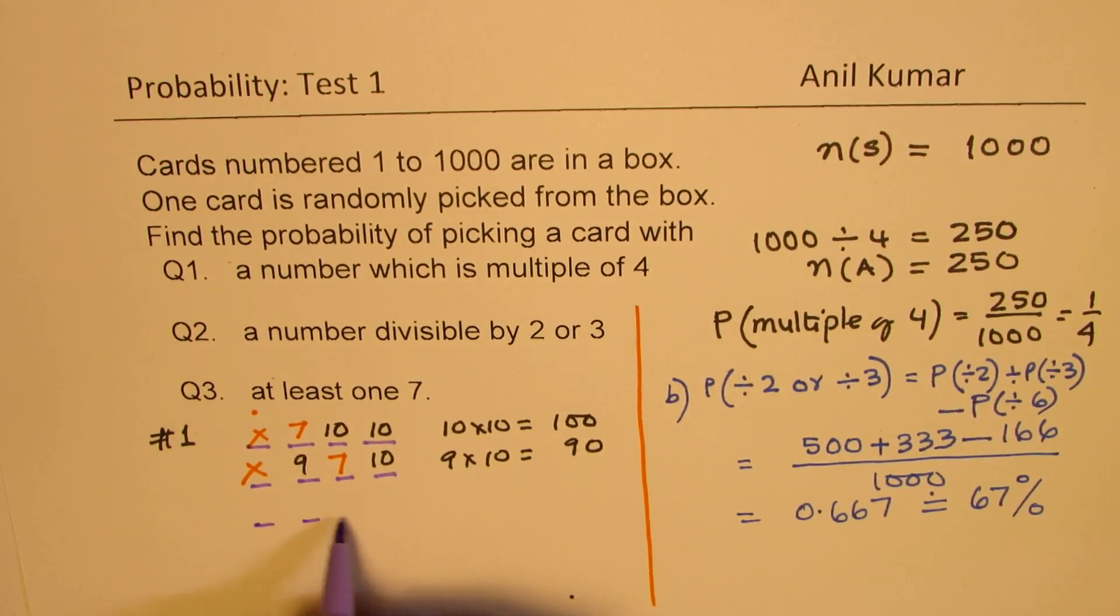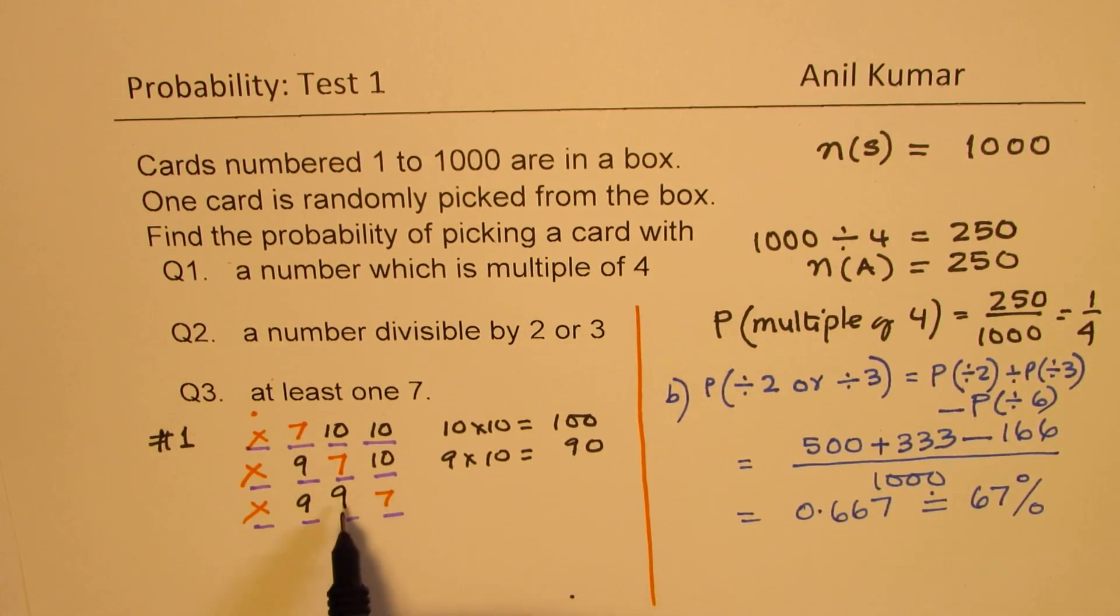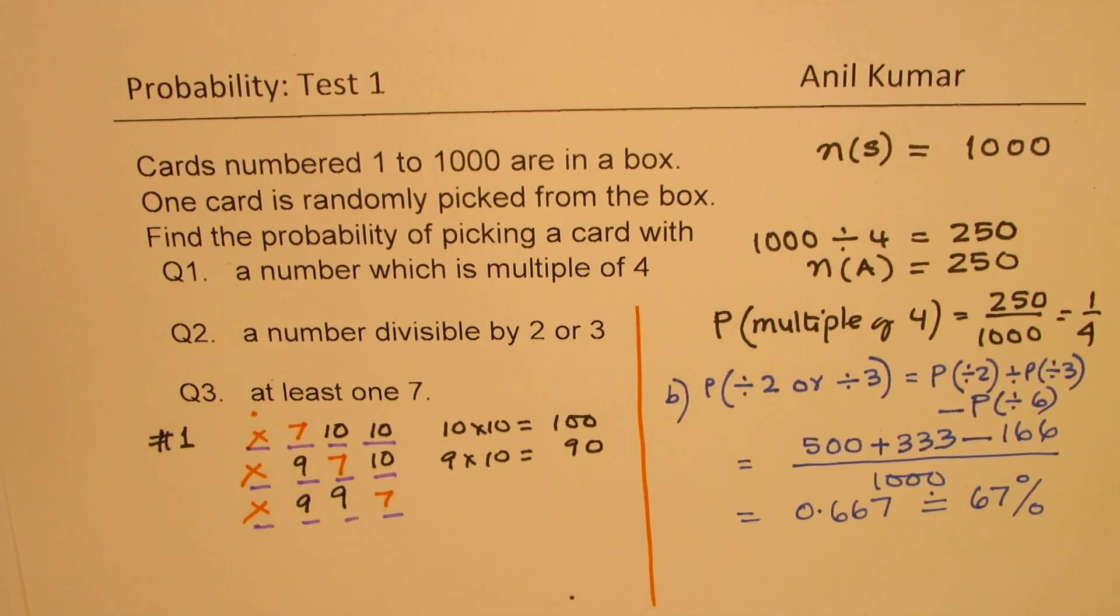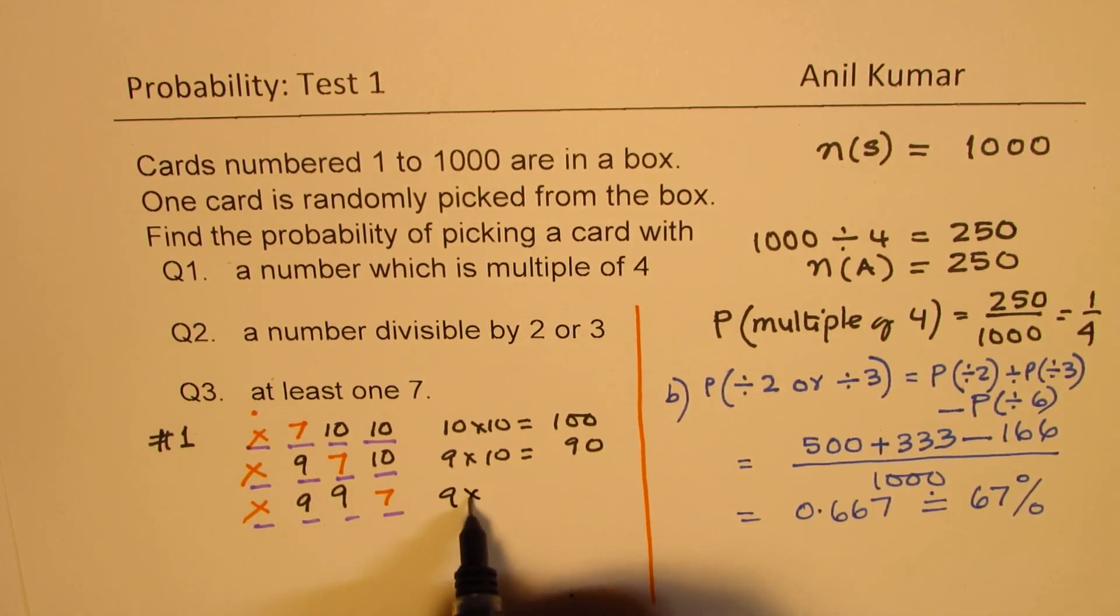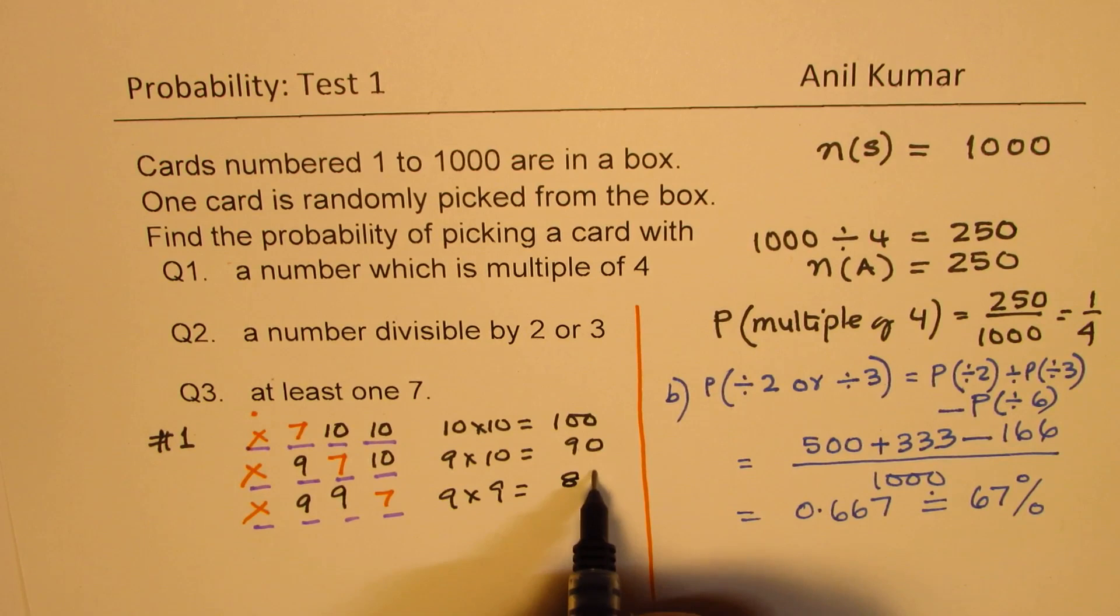Now, if we say for sure 7 is there in the third place, which is the ones place, in that case, we'd like to have 9 numbers here maximum. Since we have already considered a case with 7, here also only 9 are possible. 7 in this position has been covered. So we have 9 times 9, which is 81.